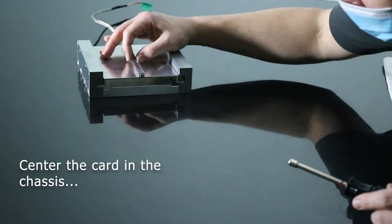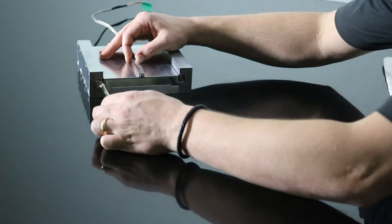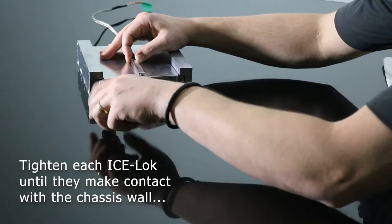Center the card side to side in the chassis and begin to tighten the ice locks. Tighten each ice lock until it comes into contact and engages with the chassis wall.